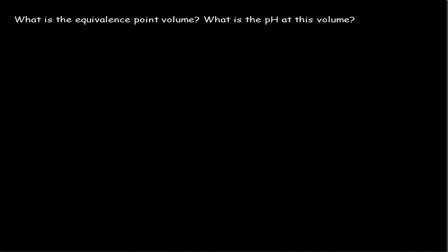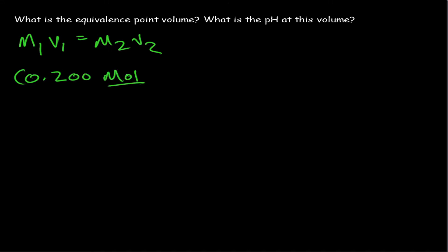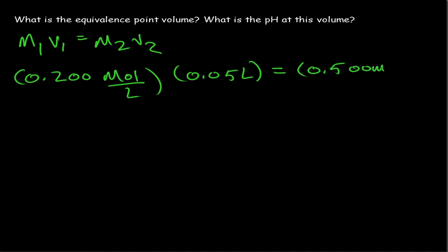The next question is: what is the equivalence point volume, and what is the pH at this volume? The equivalence point volume is easily calculated using the equation M₁V₁ = M₂V₂, where the concentration of the acid times its volume equals the concentration of the base times its volume. The concentration of the acid was 0.200 molar and the volume was 0.05 liters. This equals the concentration of the base, 0.5 molar, times the second volume V₂, which we don't know — that volume is the equivalence point volume.